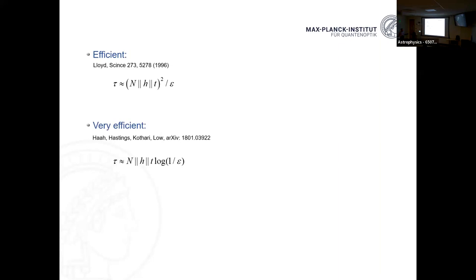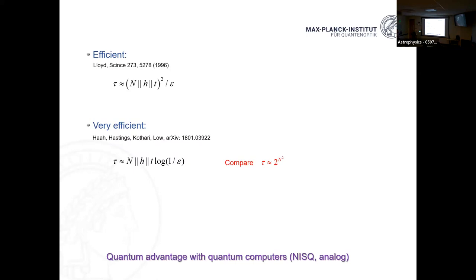Since 1996, there have been many improved algorithms. The best one now scales linearly in the number of terms and linearly in time, with logarithmic dependence on 1/epsilon. This is a very clear case where comparing the same problem on a classical versus quantum computer, there is a big advantage for the quantum computer. The advantage comes from memory — you only need n qubits — and in time the scaling is linear or quadratic, whereas classically you need an exponential number of bits and exponential time.